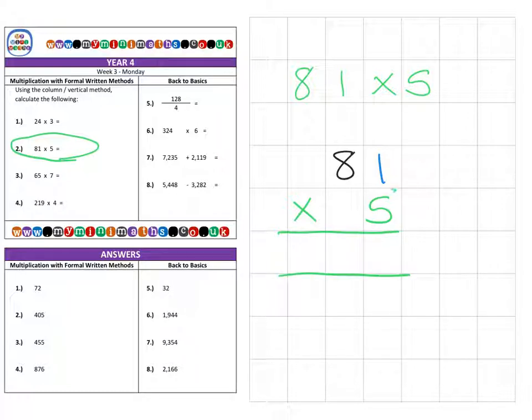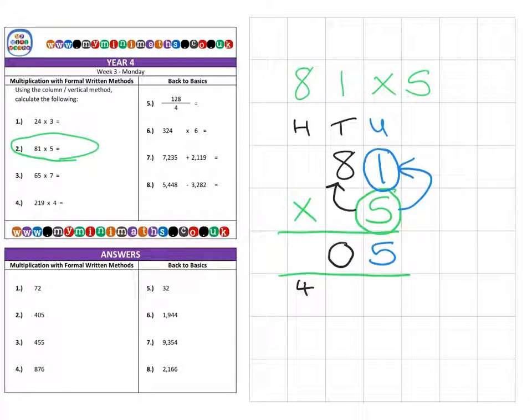If I take these units, I'm going to multiply it by the 1, so that's 5 times 1, which gives us 5. Then in the tens column, 5 times 8 (which represents 80) is 40. I place my 0 in the tens column and carry over the 4 into the hundreds column. Because we've finished all our calculations, I place my 4 into the hundreds column for a final answer of 405.